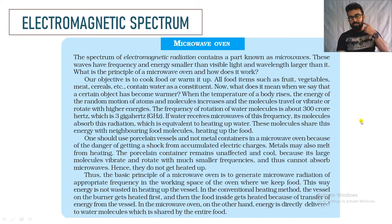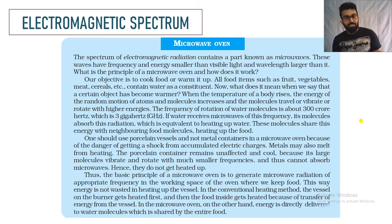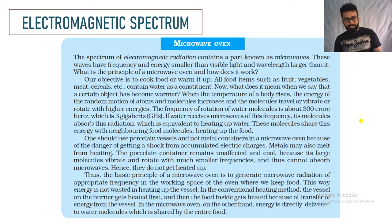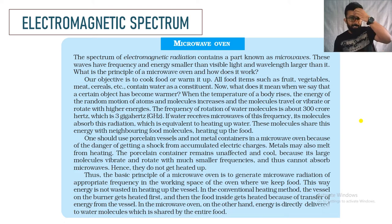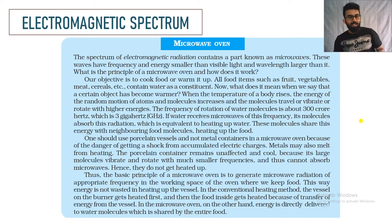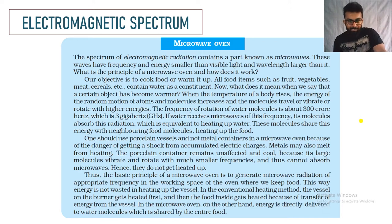Regarding microwave ovens, when we warm food in a microwave we don't use metal utensils because metal can cause electric charges and shock. Instead we use porcelain vessels. The molecules of porcelain are very large — they vibrate and rotate slowly — so the microwave energy is not effectively absorbed by them. The majority of the energy is therefore absorbed by the food. That is the reason we use porcelain vessels.